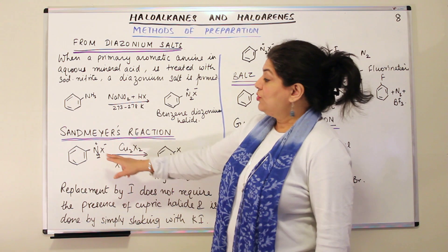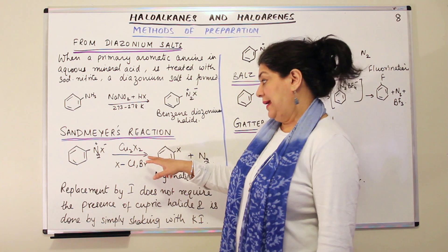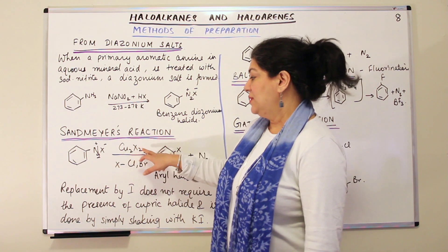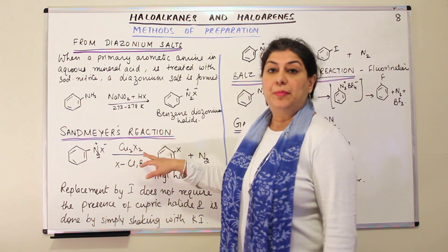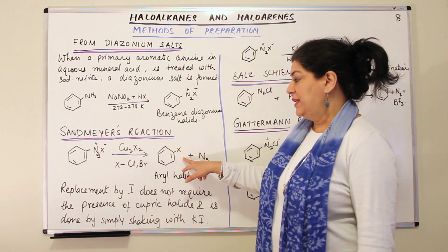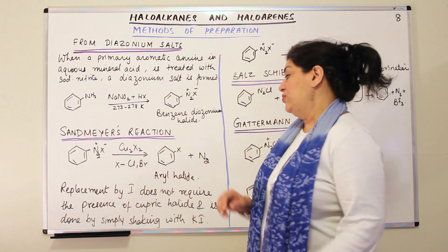So what do you do? You take the diazonium salt, you make it react with Cu2X2, that is cupric halide. The halide is either chlorine, it can be Cu2Cl2 or it can be Cu2Br2. If you use Cu2Cl2, you'll get chlorobenzene. If you use Cu2Br2, you'll get bromobenzene and nitrogen is given out.